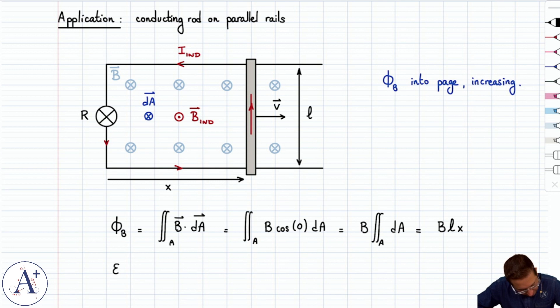By Faraday's law, epsilon induced is going to be minus d phi B dt. And that's minus d dt of B L x. Now B is uniform, so in magnitude it's constant. L is constant, and the only thing that changes is x.